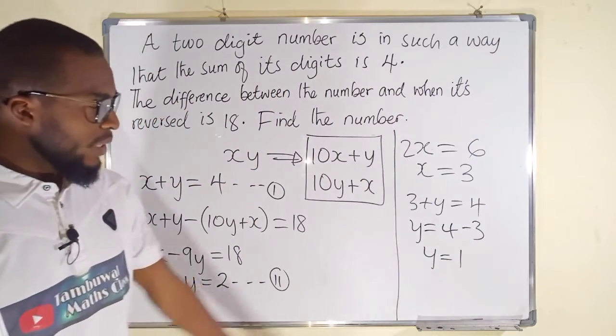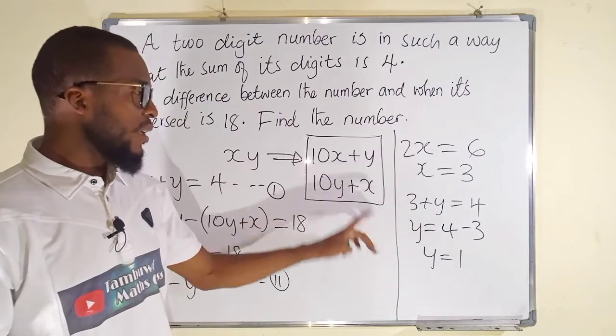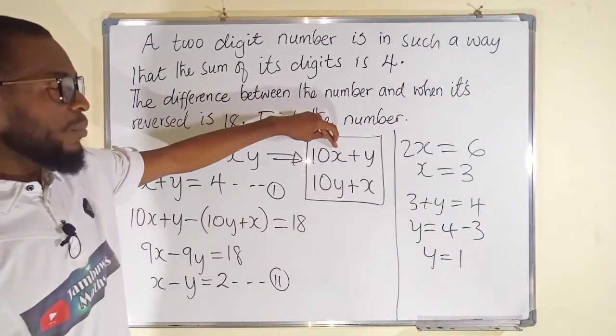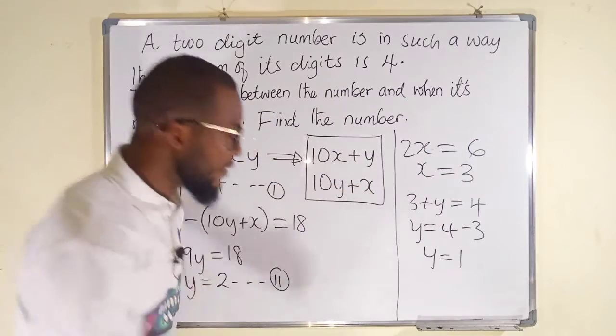We can substitute these values into these two expressions. 10 multiplied by X, 10 multiplied by 3 is 30.